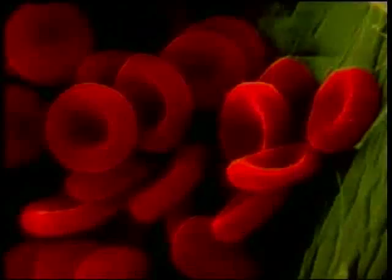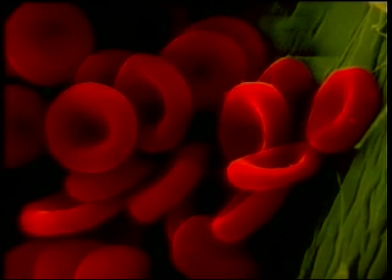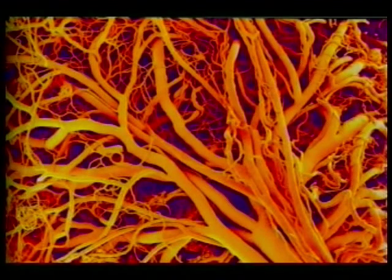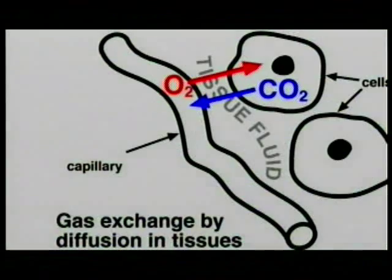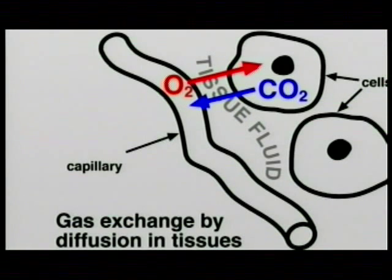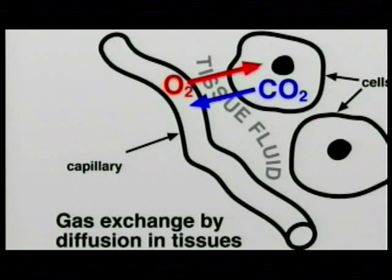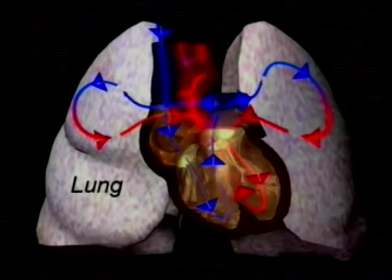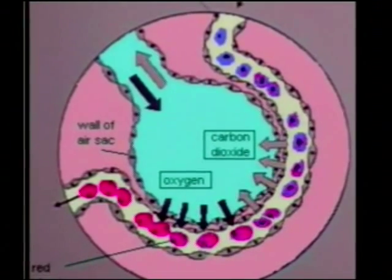The oxygen that diffuses into the blood is carried by red blood cells. The heart pumps these red blood cells around the body, and when they reach small capillaries, oxygen diffuses from the red blood cells into the body cells. At the same time, body cells have been producing carbon dioxide waste, which diffuses into the blood. The blood carries this carbon dioxide back to the heart, and from there it is pumped through the lungs where it will be exhaled.